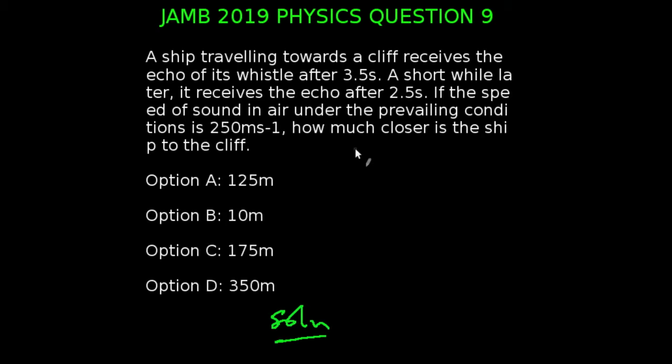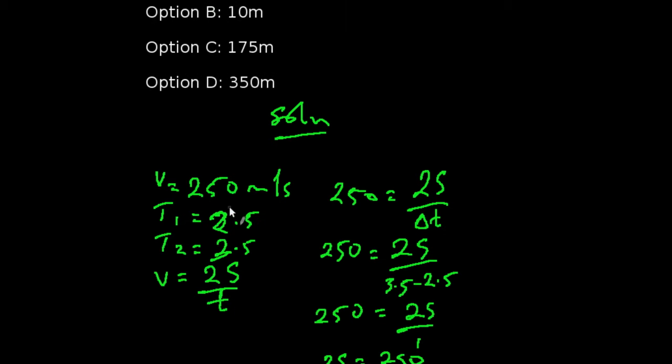JAM 2019 physics question number 9. A ship traveling towards a cliff receives the echo of its whistle after 3.5 seconds. A short while later, it receives the echo after 2.5 seconds. If the speed of sound in air under the prevailing condition, how much closer is the ship to the cliff? First of all, we'll be looking at the parameters. We have our v to be 250 meters per second. We have our t1 to be 2.5 seconds. Our t2 to be 3.5 seconds.